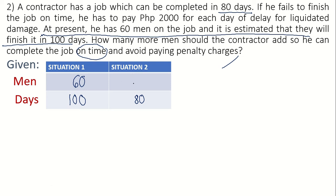For the number of men needed to finish the job in 80 days: we will add men from 60. So the number of men in situation two is 60 plus the number of men that will be added, which we don't know. We will let it as X, so situation two has 60 plus X men. This makes sense — 60 plus the added workers to target finishing on time.